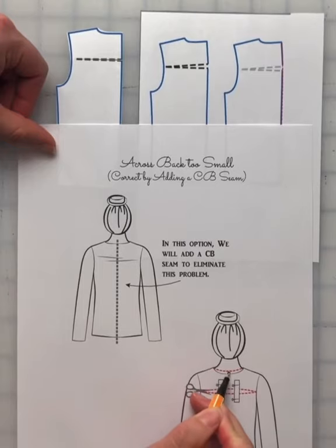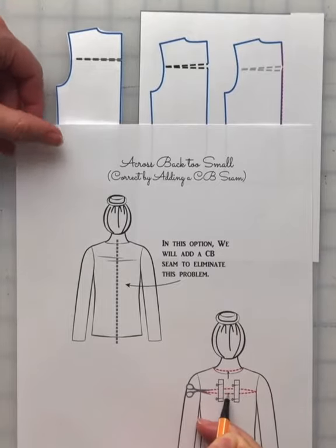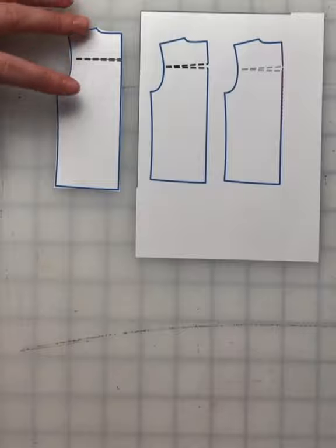If you're not happy with that neckline, you're going to cut horizontally across. Measure the amount that you've cut open and that amount you're going to come back to your pattern.